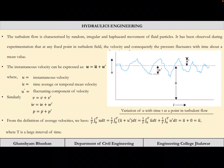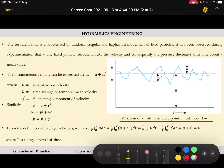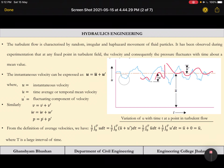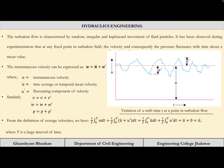This is the graph between velocity and time. At any time you can see the velocity variation — it is in a very haphazard, very irregular and chaotic manner. For the analysis of turbulent flow, what we are going to do is work around the mean velocity ū. The turbulent flow is characterized by random, irregular and haphazard movement of fluid particles.